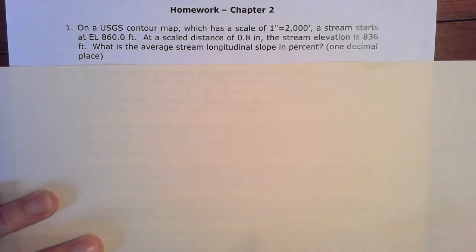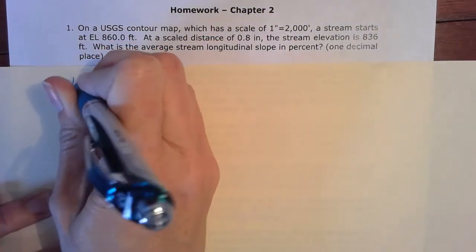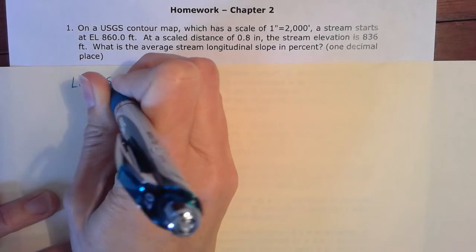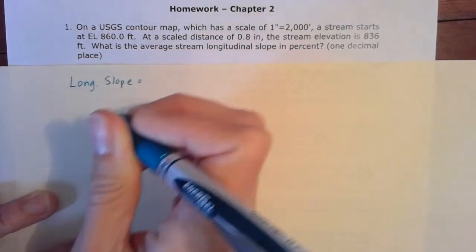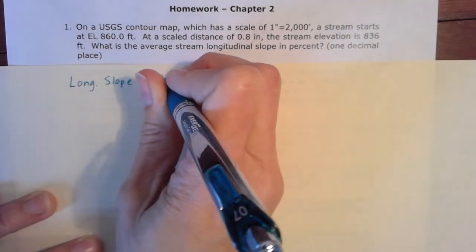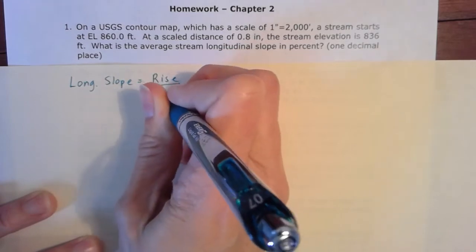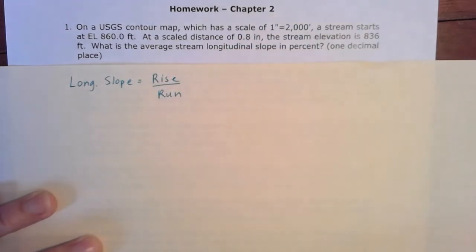So the first thing we want to think about here is what longitudinal slope means. Remember that longitudinal slope is just that rise over the run, the vertical distance over the horizontal distance, our definition of that that we've been talking about.